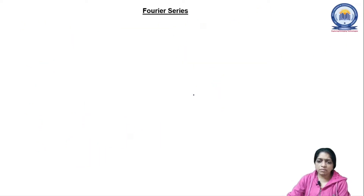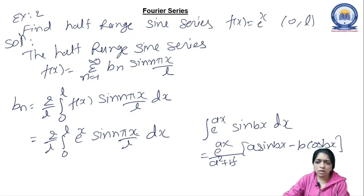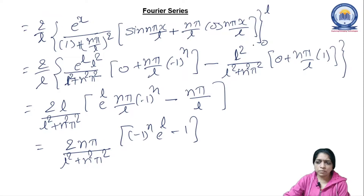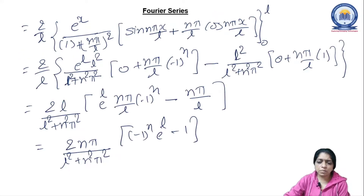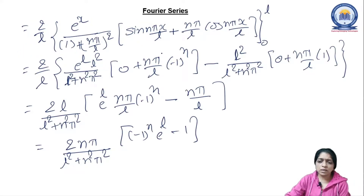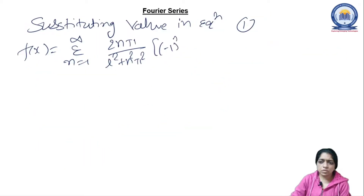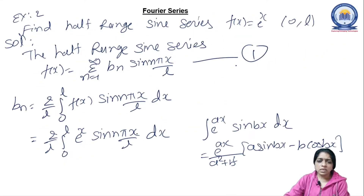Substituting bₙ into equation 1: f(x) = summation n=1 to infinity of [2nπ/(L² + n²π²) · ((−1)ⁿ eᴸ − 1)] · sin(nπx/L). This is the half range sine series for the given function f(x) = eˣ.